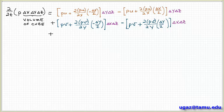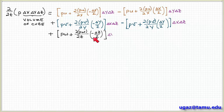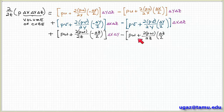And similarly in the z direction we have the inflow from the back face — rho w plus the partial of rho w with respect to z times minus delta z over 2 — times the area of that face delta x delta y, minus the outflow from the front face in the z direction — rho w plus partial of rho w with respect to z times delta z over 2 — times the area of that face delta x delta y.